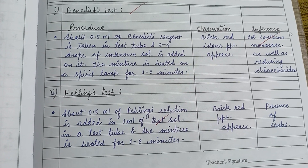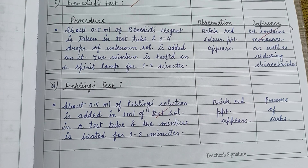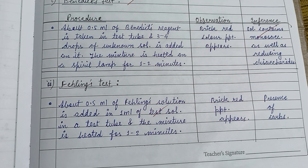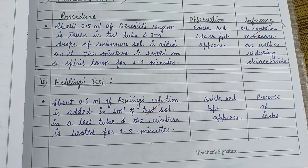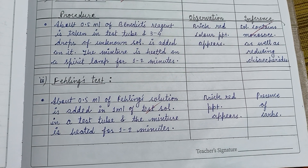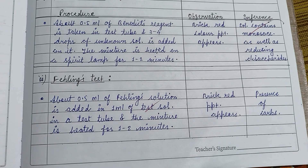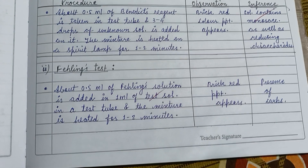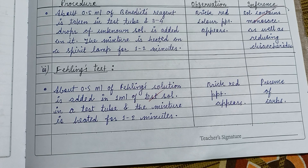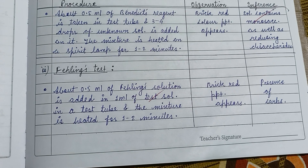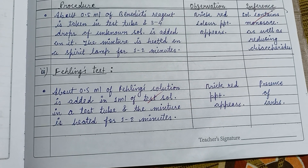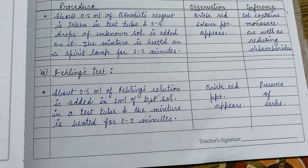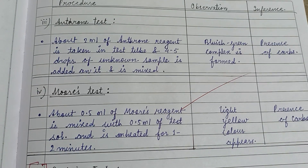For the Benedict test, 0.5 ml of Benedict reagent is taken and added into the unknown solution. A brick red color appears, indicating the presence of carbohydrates. Next is the Fehling test: 0.5 ml of Fehling solution is added to 1 ml of the test solution, and a brick red precipitate appears, indicating the presence of carbohydrates.